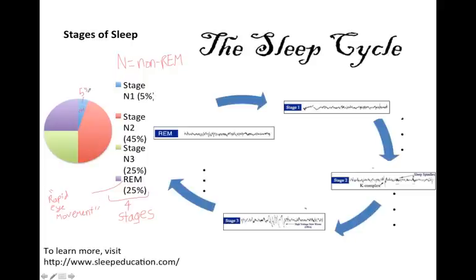N2, which we spend about 45% of our sleep in, is still moderately light and not hard to be woken up from. N3, which we spend about 25% of our sleep in, is considered to be the start of deep sleep. If we are woken up from N3, we feel especially tired.